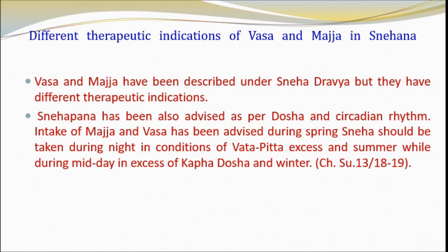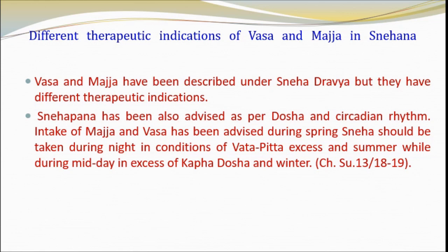Regarding different therapeutic indications of Vasa and Majja in Snehan — Vasa and Majja have been described under Sneha Dravya but have different therapeutic indications. Sneha Pana has been advised as per Dosha and circadian rhythm. Intake of Majja and Vasa has been advised during spring. Sneha should be taken during night in conditions of Vata-Pitta excess and summer, while during midday in excess of Kapha Dosha and winter.